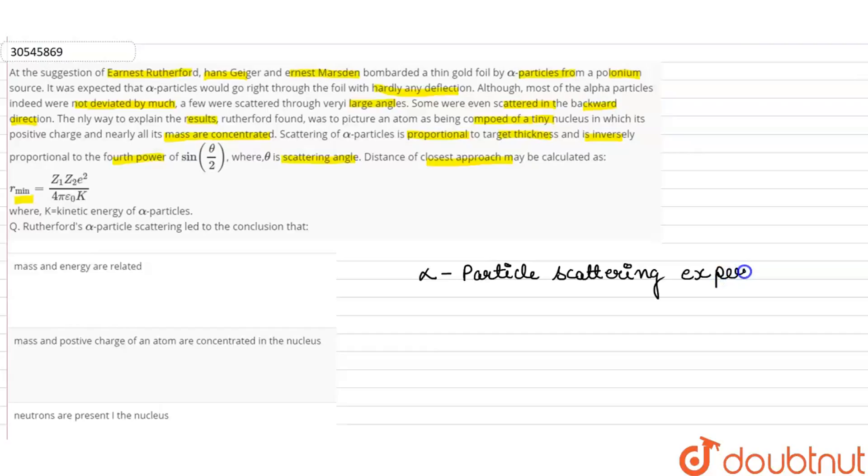Okay, now when the alpha particles bombarded the thin gold foil, what happened is that most of the alpha rays passed through. But a very small number of alpha rays were slightly deviated, and a few alpha rays were deflected at 180 degrees.